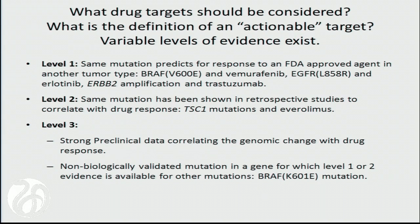What are the other levels of evidence? Level two evidence could be: the same mutation has been shown in a retrospective study to correlate with drug response — this would be our TSC1 example. We don't have an approved biomarker-drug link here, but it makes sense based on clinical data. Level three evidence would be strong preclinical data correlating with the genomic change, or maybe a non-biologically validated mutation in a gene for which level one or two evidence is already available — for example, a HER2 mutation that no one has tried to show is activating or not, but we know that when that target is activated, it leads to oncogenic dependence in many tumors.